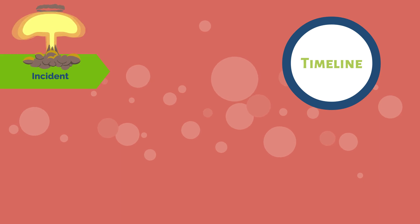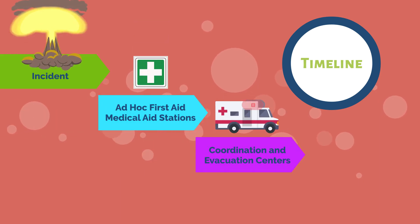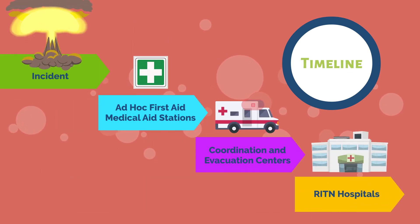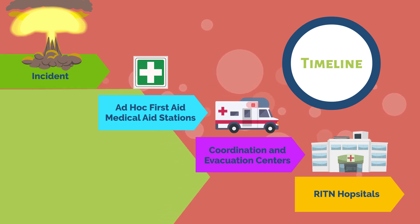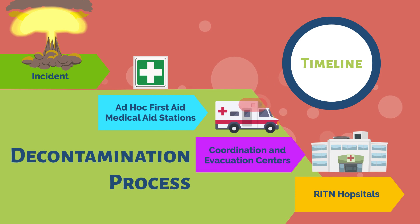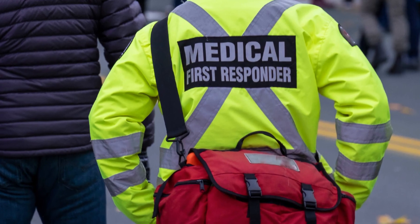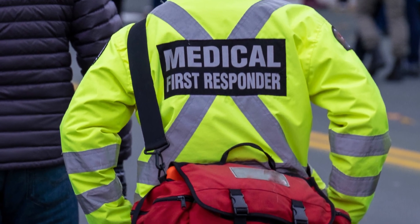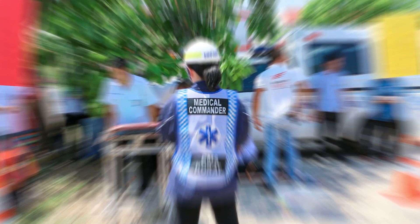Let's follow the movement of casualties from the incident site to arrival at a Radiation Injury Treatment Network hospital, and consider the timing of this movement to more clearly grasp the decontamination process, as well as how and when patients may arrive at your facility. Patient care begins immediately after the incident with first responders and ad hoc medical care located closest to the incident site.